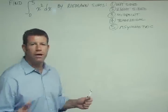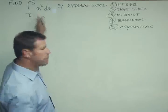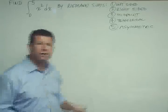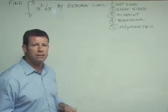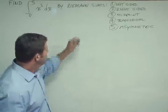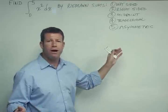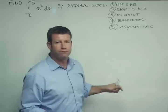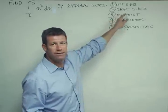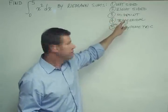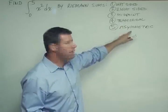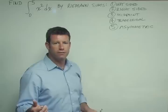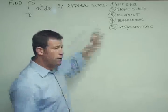So I have here a simple problem statement: calculate the integral from 0 to 5 of x squared dx using Riemann sums. What are all the different ways you can possibly do a Riemann sum? Well, the left-sided Riemann sum, the right-sided Riemann sum, the midpoint, trapezoidal, and then asymmetric, where the width of each piece is different. So let's go through all these.